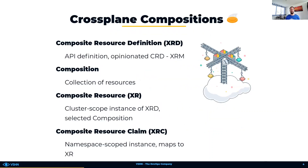The next key feature are the Crossplane Compositions. This feature allows for custom and opinionated infrastructure definitions, which can be easily composed and provided to the user of the platform in a self-service way. This feature consists of four object types, which we will now be getting to know.